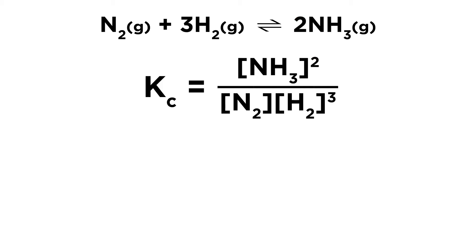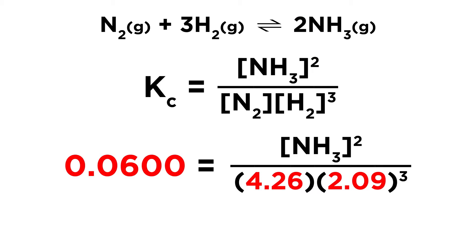So that is our expression, and now we just plug in what we know. And as it turns out, we know everything except one thing. So we have that constant, it is 0.0600. We have our nitrogen concentration, it's 4.26. And we have our hydrogen concentration, it's 2.09, and that will be raised to the third power.